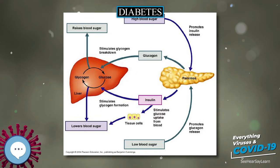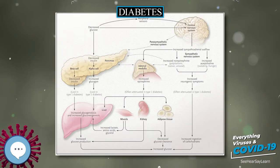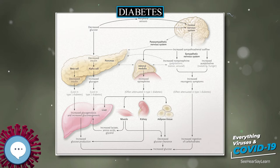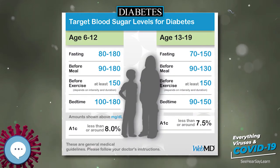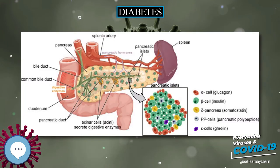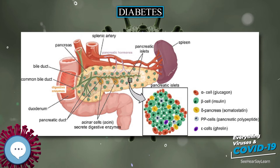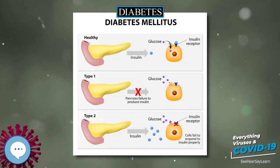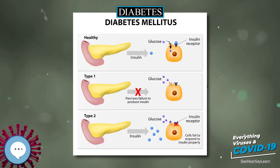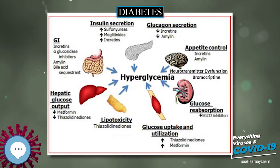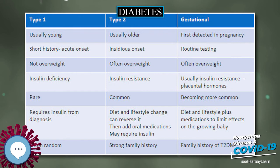Gestational diabetes mellitus (GDM) resembles type 2 diabetes in several respects, involving a combination of relatively inadequate insulin secretion and responsiveness. It occurs in about 2–10% of all pregnancies and may improve or disappear after delivery. However, after pregnancy approximately 5–10% of women with GDM are found to have diabetes mellitus, most commonly type 2. GDM is fully treatable, but requires careful medical supervision throughout the pregnancy. Management may include dietary changes, blood glucose monitoring, and in some cases insulin may be required.